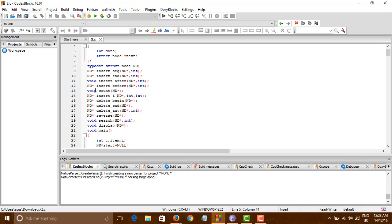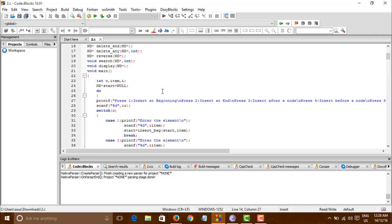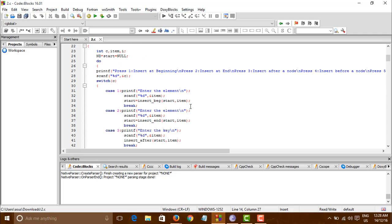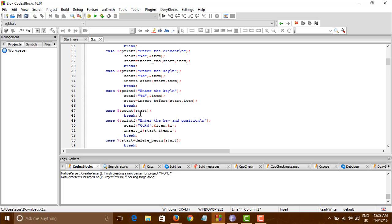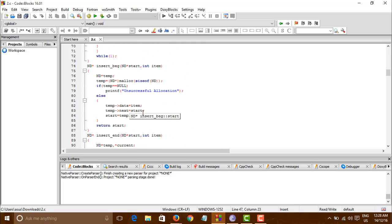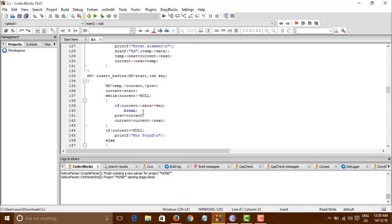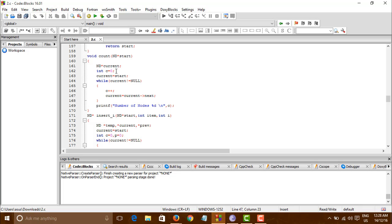Today we'll be learning about the count function: void count with the start pointer. When we call count with start, we go to the count function. Current is set to zero, current equals start, then we traverse to the end of the loop and print the number of nodes.